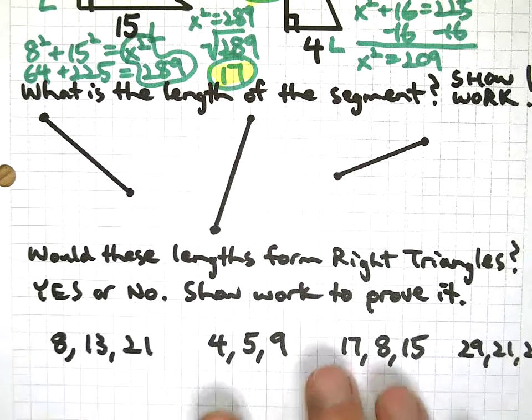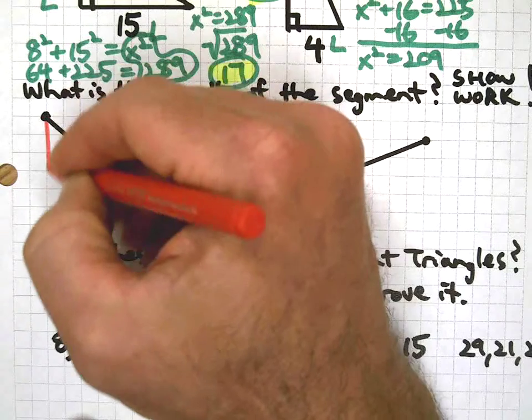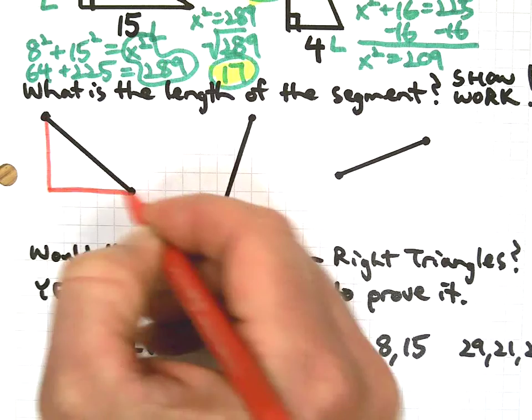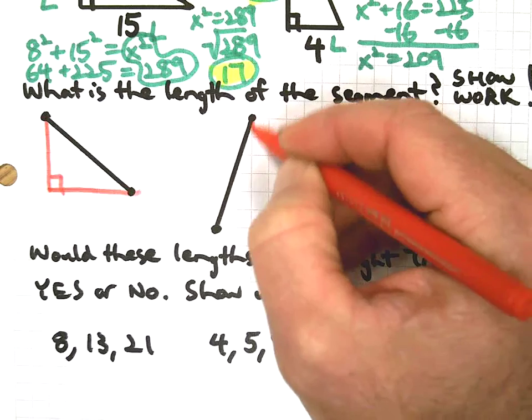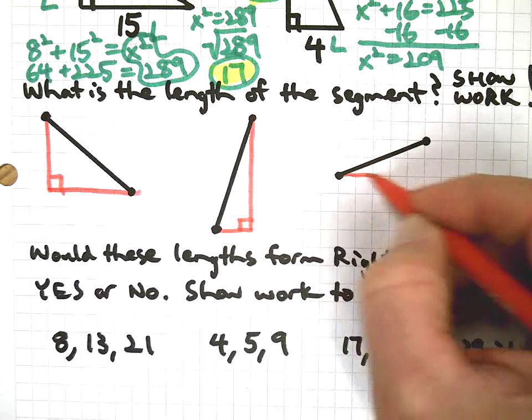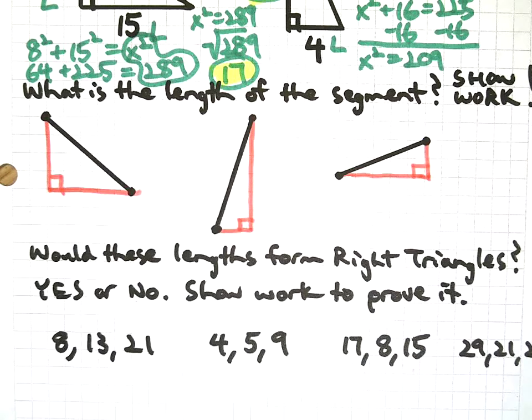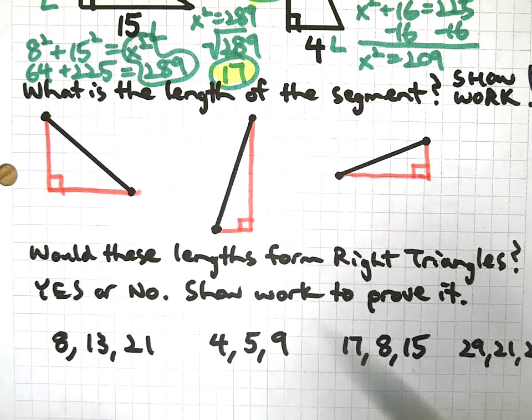All right, let's move on. These are always popular questions, whether you're taking the Smarter Balanced test or just some classroom test. These always seem to show up and they cause some confusion. But here's how you avoid confusion: understand that they're Pythagorean theorem questions, and all of a sudden we can deal with it.